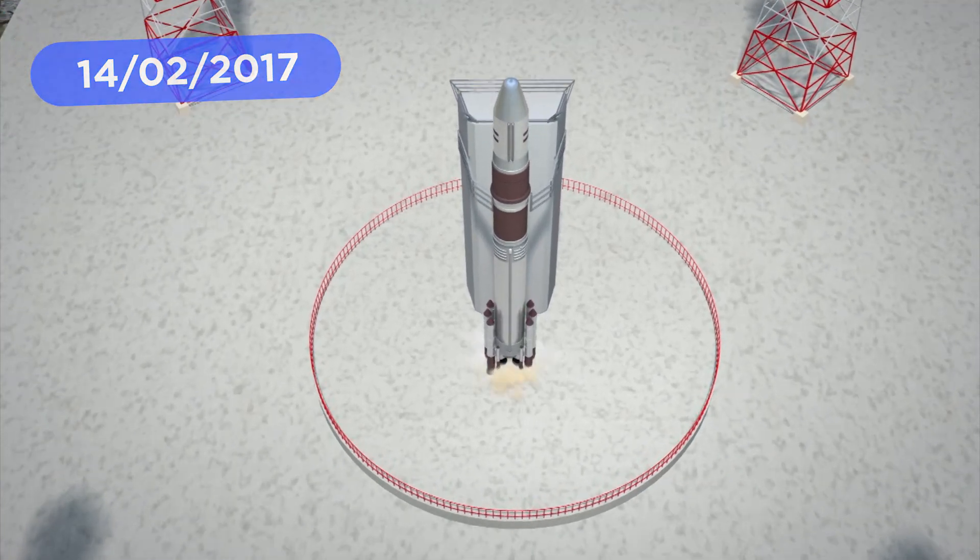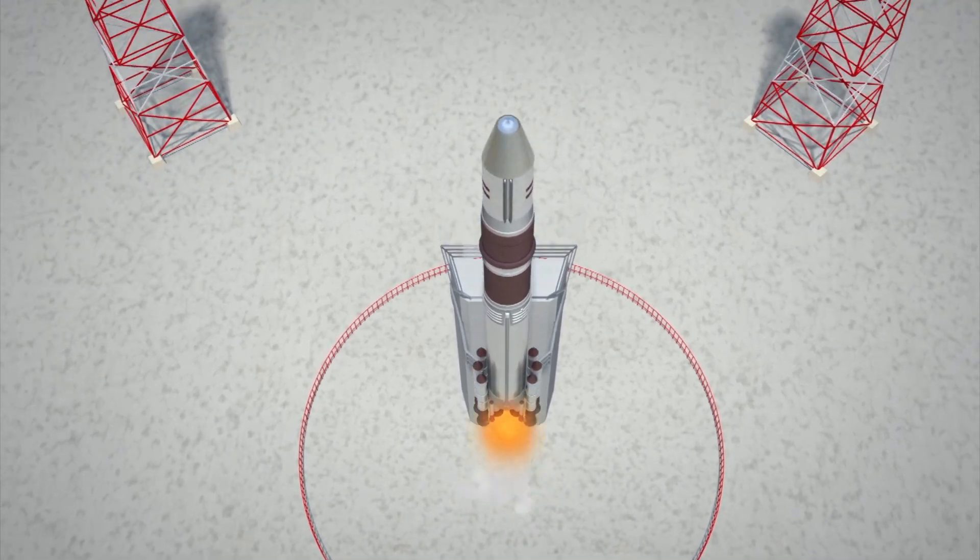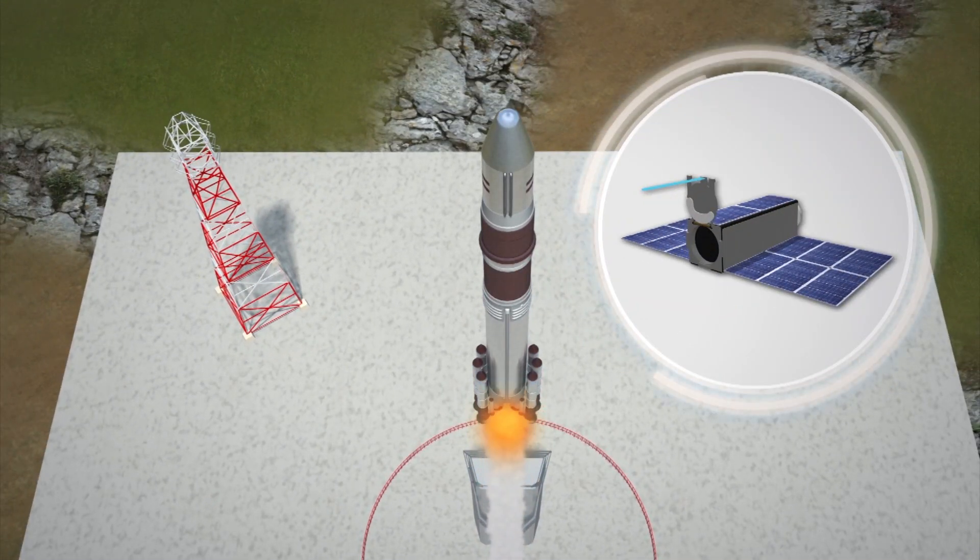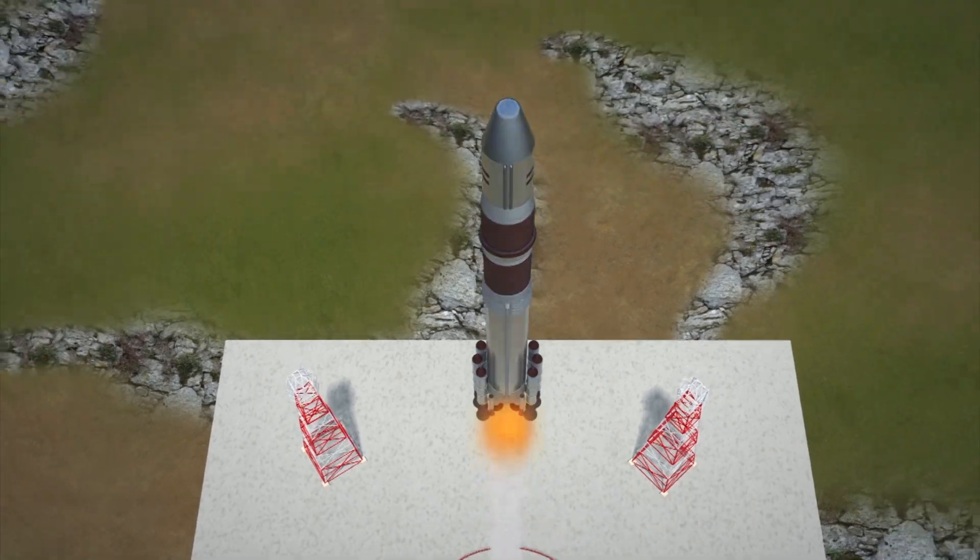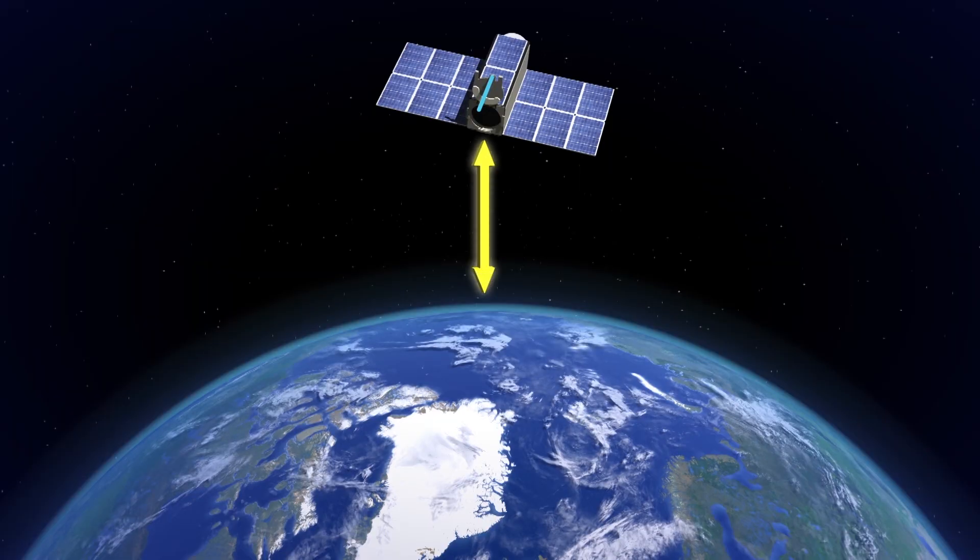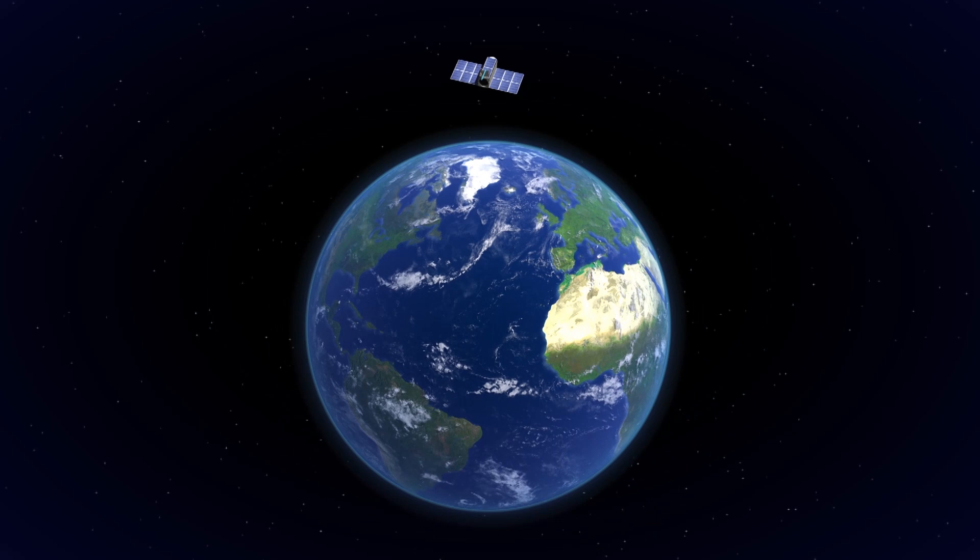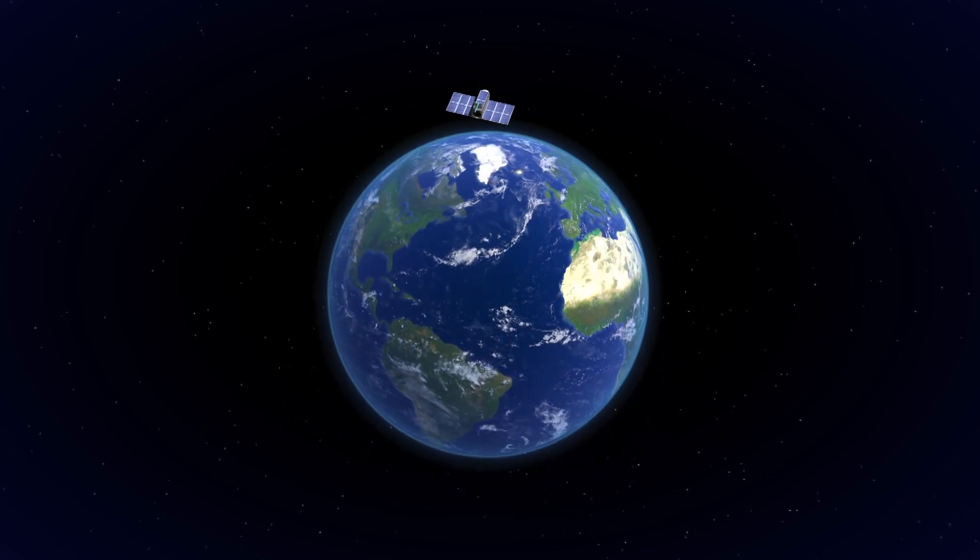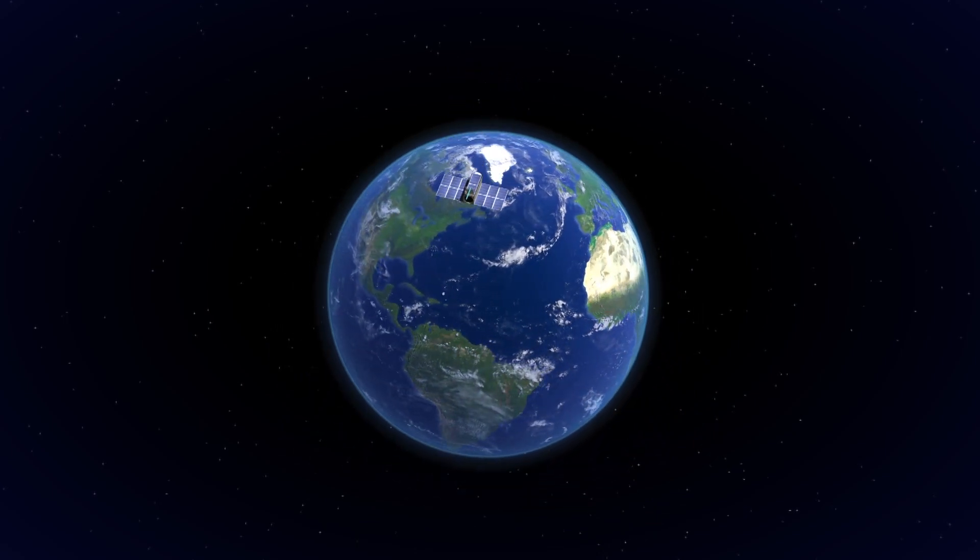A San Francisco startup named Planet plans to launch the largest fleet of satellites in history aboard a rocket from India. The 88 Dove imaging satellites will be deployed at an approximate altitude of 500 kilometers on a sun-synchronous orbit. That means they will pass over any given point on the Earth's surface at the same local solar time.